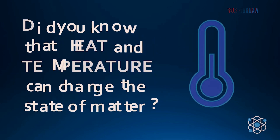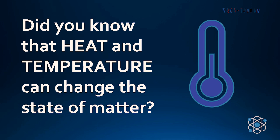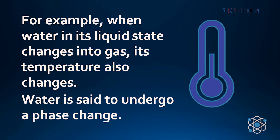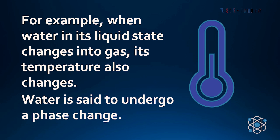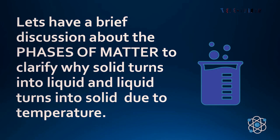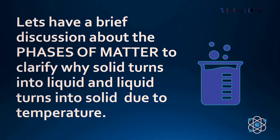Did you know that heat and temperature can change the state of matter? It's true! For example, when water in its liquid state changes into gas, its temperature also changes. Water is said to undergo a phase change. Let's have a brief discussion about the phases of matter to clarify why solid turns into liquid and liquid turns into solid due to temperature.